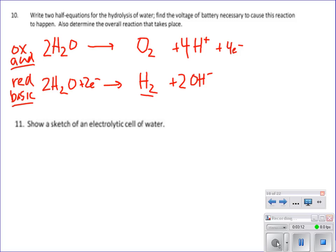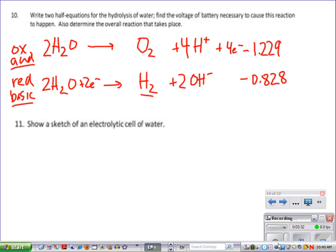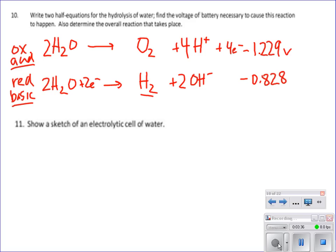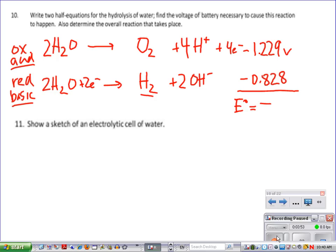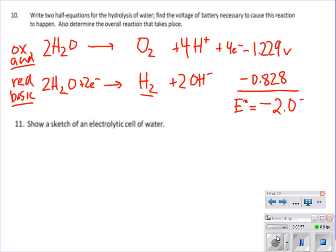Then it says find the voltage of the battery necessary to cause this reaction to happen. So everyone look at your reduction potential table. You're going to find the reduction one, the second one, as is on the table. You're going to have to find the reverse of the oxidation one on the table. The first reaction is an oxidation reaction. It was found to have a reduction potential of 1.229 volts. However, since it's oxidation, we made it negative. The reduction of water, as is on the table, was negative 0.828. So what is our voltage? Negative 2.057 volts. So what does this tell you? Non-spontaneous. That's why we need an electric current to make this happen. That's why this has to be done in an electrolytic cell.